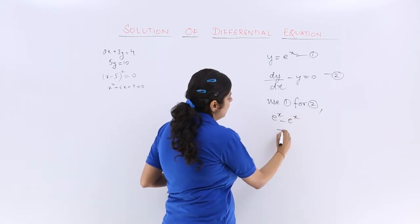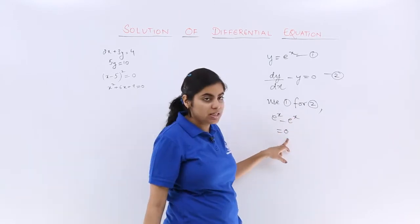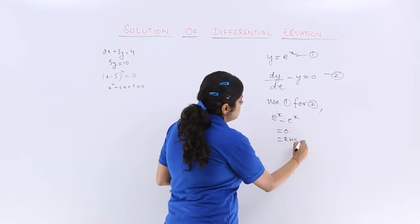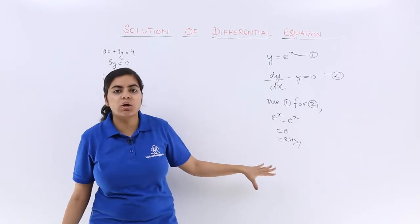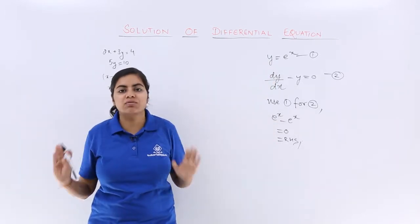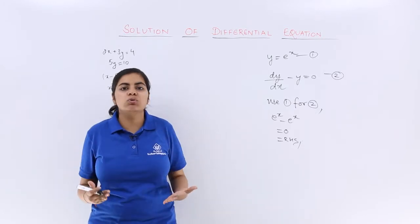You know e raised to the power x minus e raised to the power x is equal to 0 which is equal to the right hand side. So, I say that my differential equation solution is y is equal to e raised to the power x. That is for sure. This is how you do it.